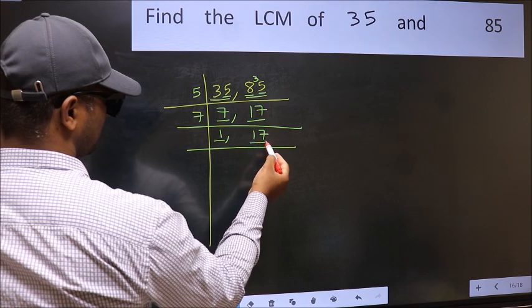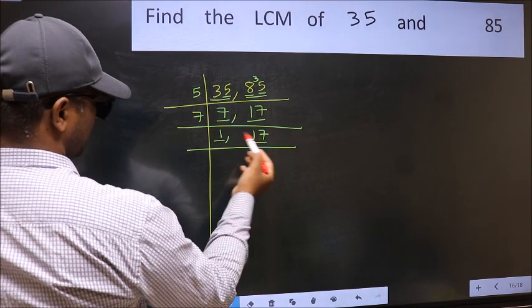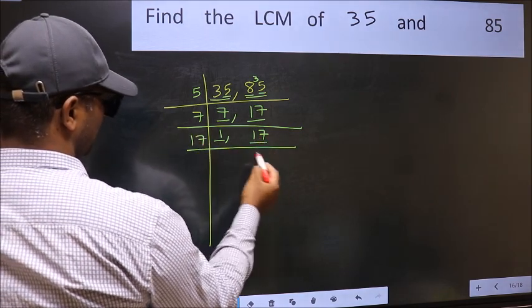So focus on the next number, 17. 17 is a prime number, so 17, 1, 17.